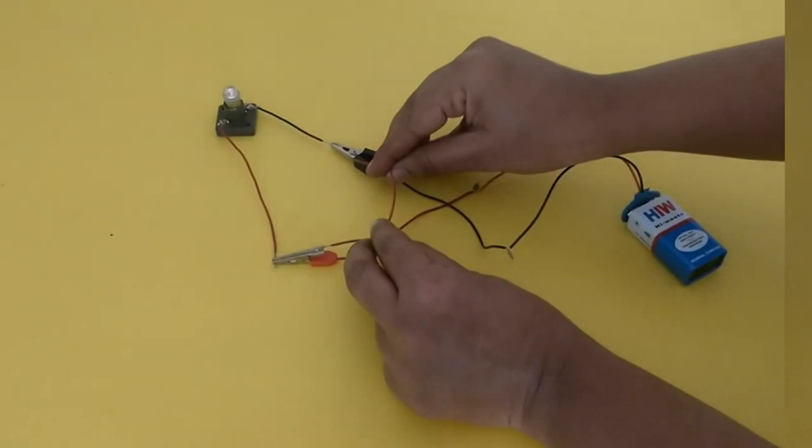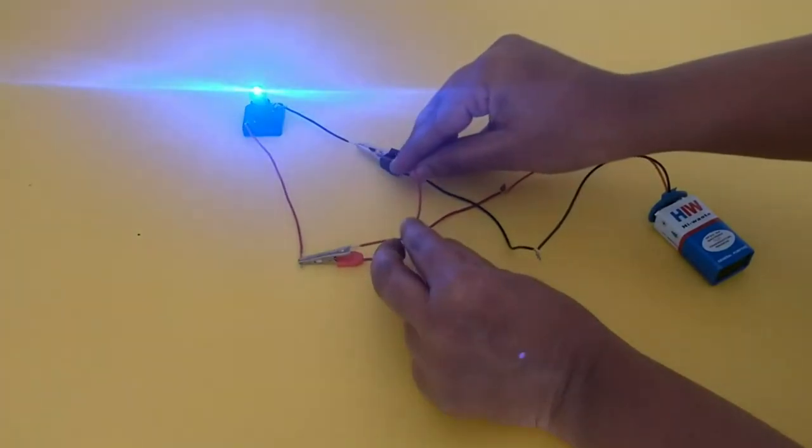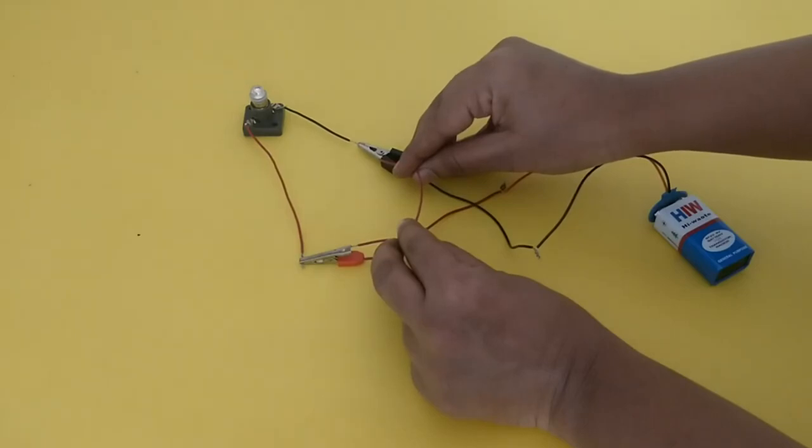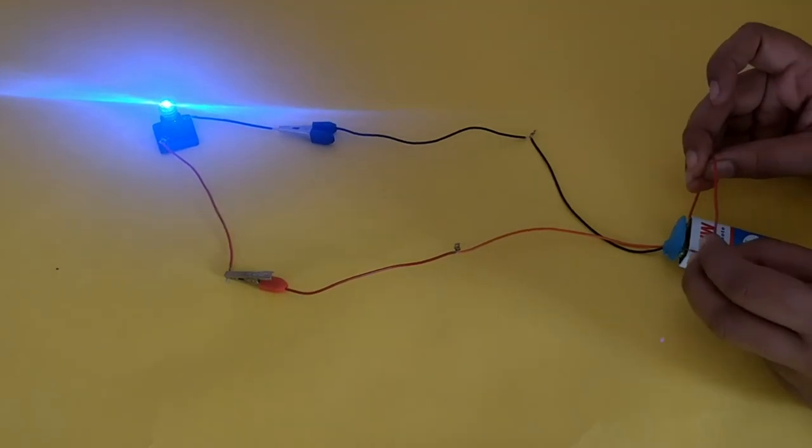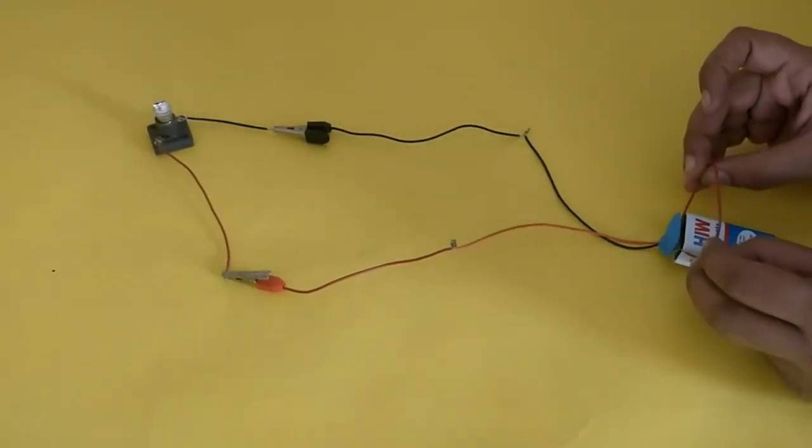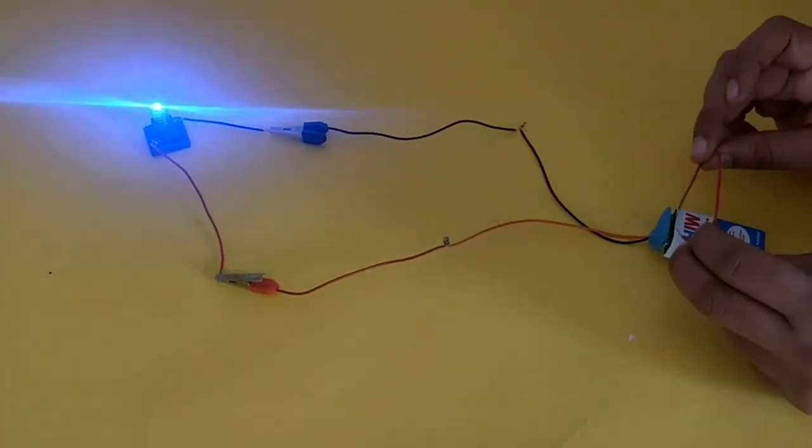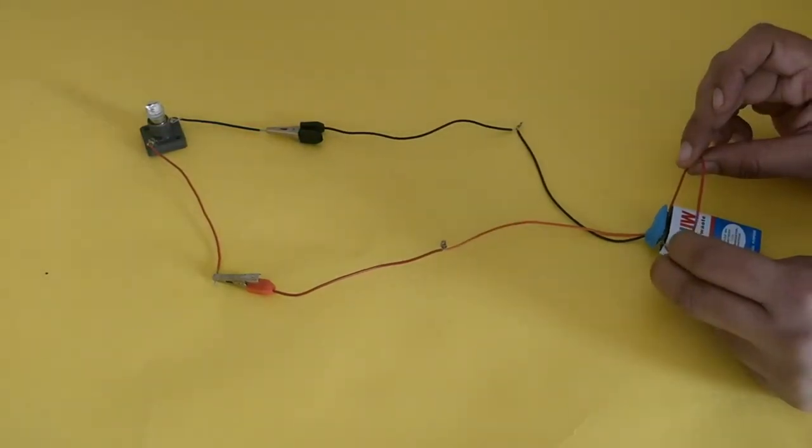Look here. If you touch the crocodile clips with the wire, then also bulb is not glowing. Think about the reason. Here, we are connecting battery terminals with the wire. Here also bulb is not glowing. What is the reason?